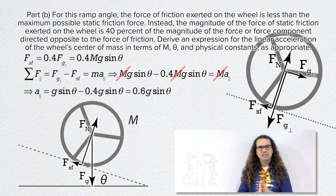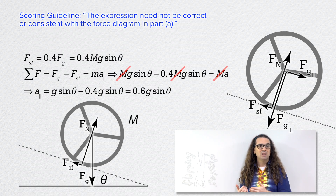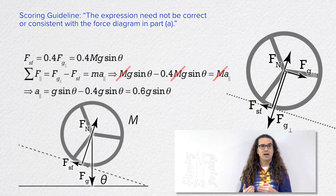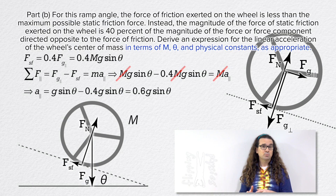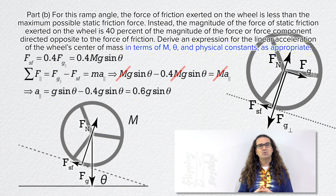A note about grading: the scoring guideline states the expression need not be correct or consistent with the force diagram in part A, meaning you do not have to get part A correct to earn points for part B. Always answer every question regardless of whether you think your prior solution is correct. Also make sure your answer is in terms of the variables provided — mass, incline angle, and physical constants. If your answer includes extra variables like the coefficient of static friction, that answer is incorrect. You do not need to substitute a number for g because it is a fundamental constant.